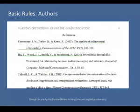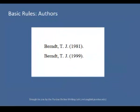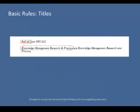Reference list entries should be alphabetized by the last name of the first author of each work. If you have more than one article by the same author — single author references or multiple author references with the same authors in the same order — list the entries in chronological order from earliest to most recent. Present journal titles in full and maintain the punctuation and capitalization used by the journal in its title.